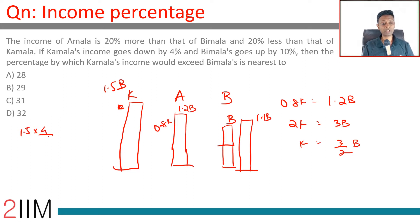1.5 into 4 by 100. This 1.5 into 4 is 6, 6 by 100 is 0.06. Subtract that, you get 1.44B.